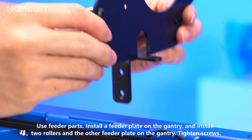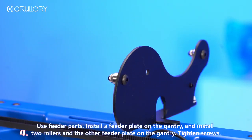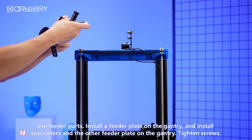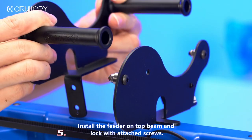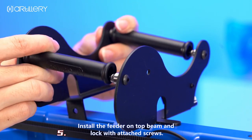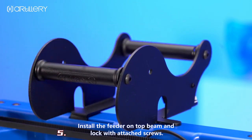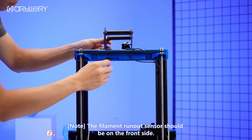To assemble the feeder parts, install a feeder plate on the entry and install two rollers and the other feeder plate in the gantry. Tighten screws. Install the feeder on top beam and lock with attached screws. Note, the filament run-out sensor should be on the front side.